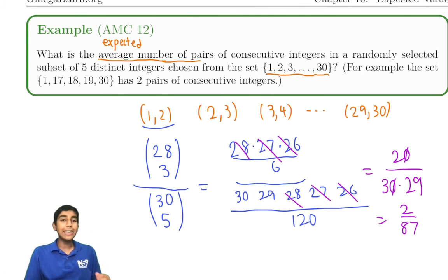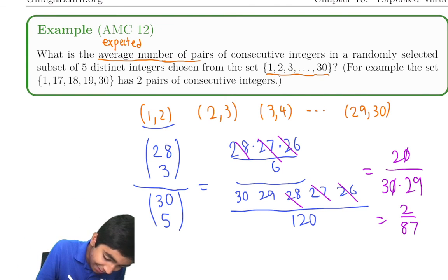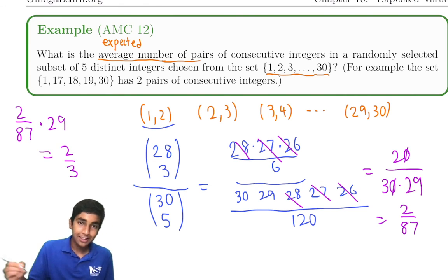So 2 over 87 is the probability that one of these pairs of integers is chosen. But that's just one. We're asked to find the expected amongst all 29. Linearity of expectation is going to do its trick again. 2 over 87 chance per pair of numbers. So because there's 29 pairs, 2 over 87 times 29 equals 2 thirds. Isn't that cool?